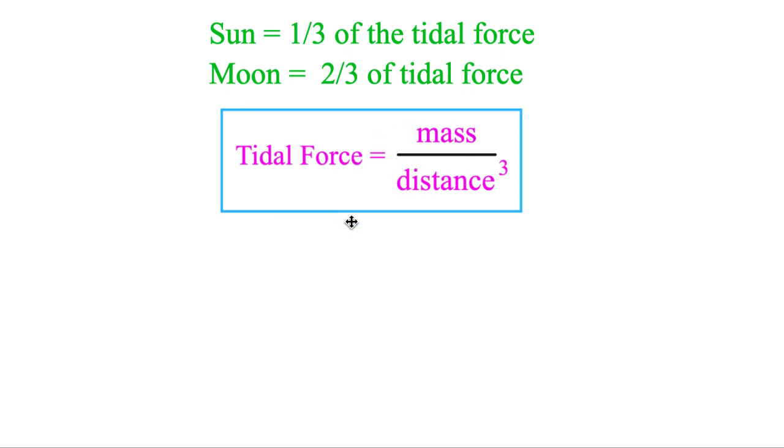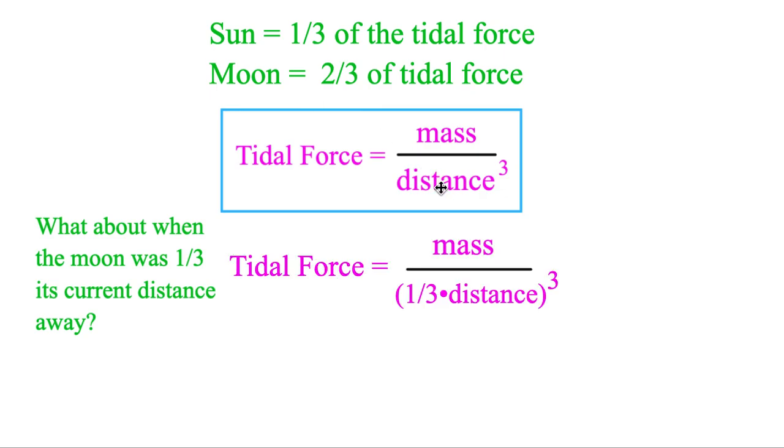Now what else could we use this formula for? Well, the Moon used to be at least three times closer. So what was the tidal force like when the Moon was only one-third its current distance away? In other words, three times closer. Well, we could just change that down there to one-third the distance. And then one-third cubed.